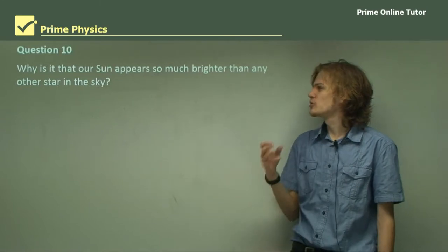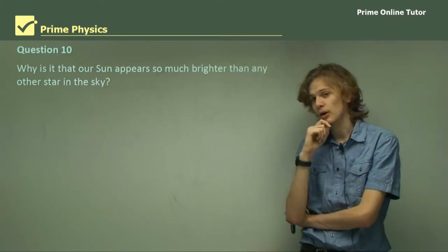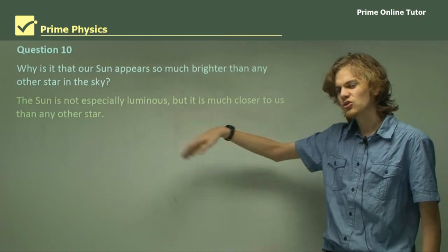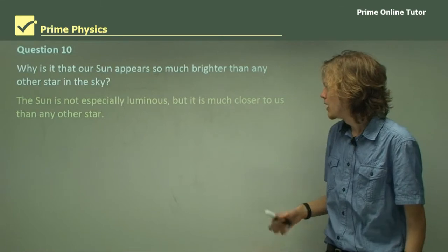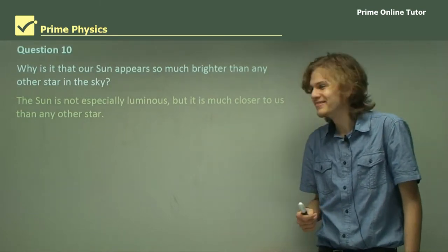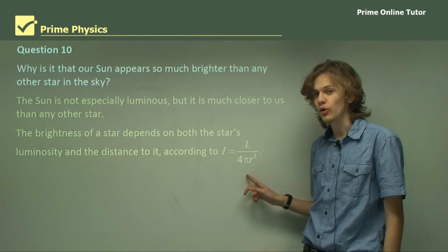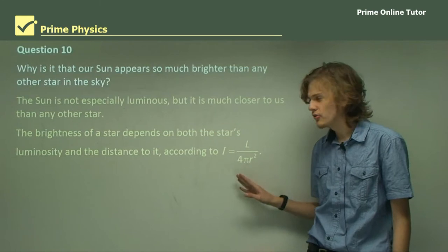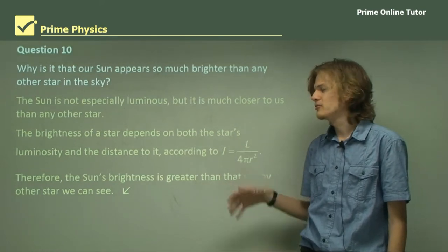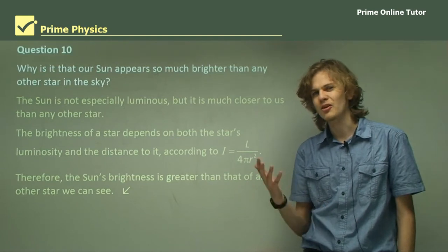Question 10. Why is it that our Sun appears so much brighter than any other star in the sky? The greatest factor in brightness is not the luminosity, but the distance away from it. The Sun is not especially luminous—it's not much more luminous than many other stars in the sky. However, it's much closer to us than any other star. Being in the same solar system is about as close as you can get in astronomical terms. The brightness depends on both the star's luminosity and the distance to it. For our Sun, that distance is very small, so the intensity is very large. Other stars are certainly far more luminous, but the Sun's the closest.